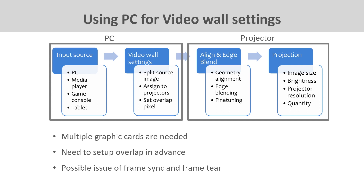In the scenario of using PC for input and video wall settings, alignment and edge blending are handled by high-end projectors with those built-in functionalities. Multiple graphics cards are needed to output to multiple projectors, and the graphics card must have the capability to crop and create overlap images — which typically requires expensive high-end cards rather than generic ones. Synchronizing images from multiple cards is also a significant challenge.